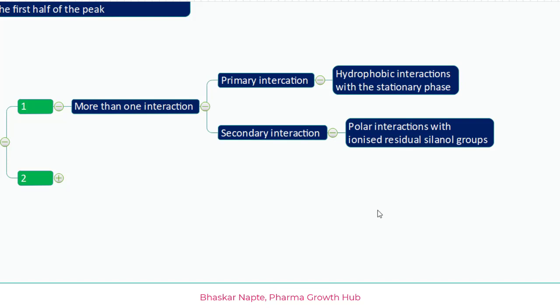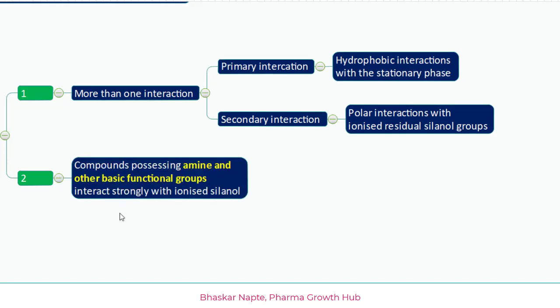Before discussing how to overcome secondary interaction, let us understand the second reason for peak tailing. Compounds possessing amine and other basic functional groups can strongly interact with silanol groups. If they have stronger interaction with the silanol groups, you can see stronger tailing happening.